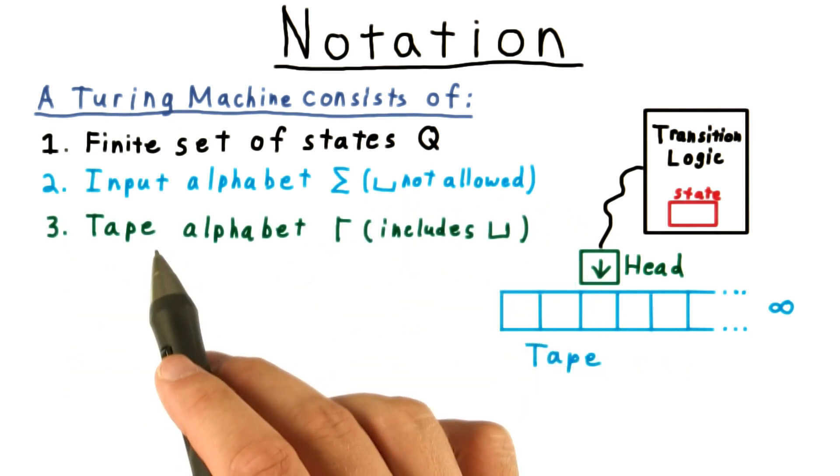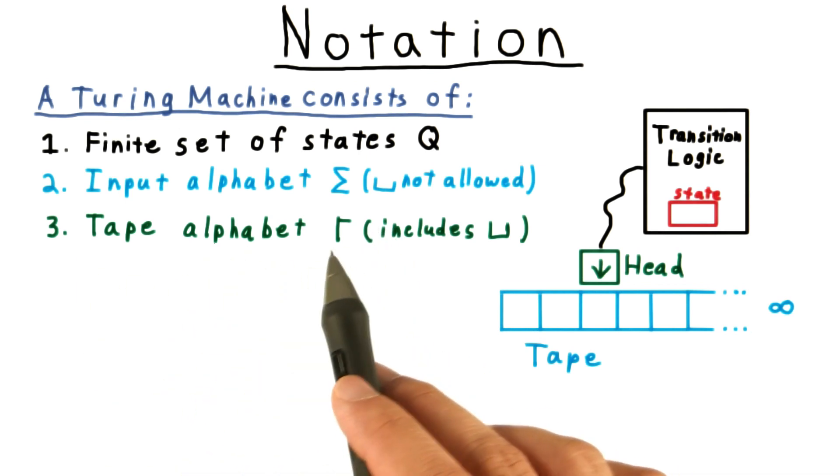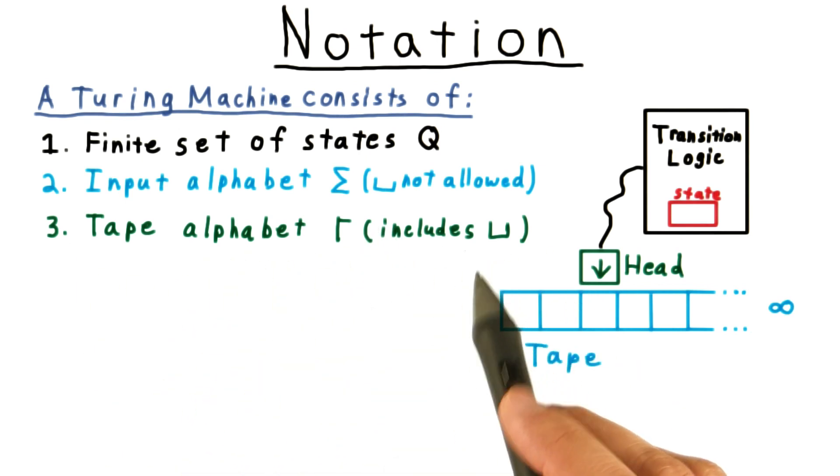We also define the tape alphabet of symbols, and that's the set of symbols that the read-write head can use. And this will include the blank symbol.